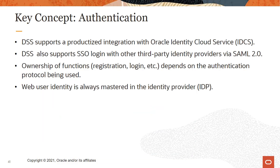The final integration concept to understand is authentication. As we shared in the Digital Self-Service Authentication video, DSS supports two primary options of authentication integration: native integration with Oracle Identity Cloud Service, or IDCS, or SAML 2.0 integration with other third-party identity management providers. Functions such as registration, login, and password policy management have different ownership depending on the authentication method selected. In either scenario, the web user identity is mastered in the identity management system and granted access to the digital self-service account information through an authorized token.